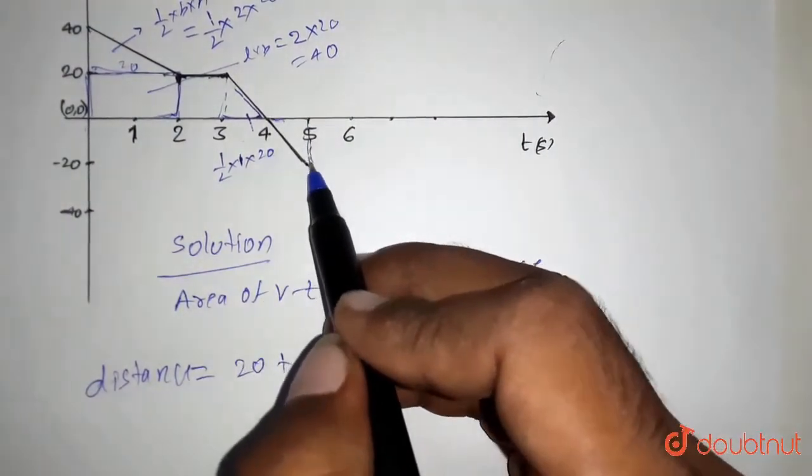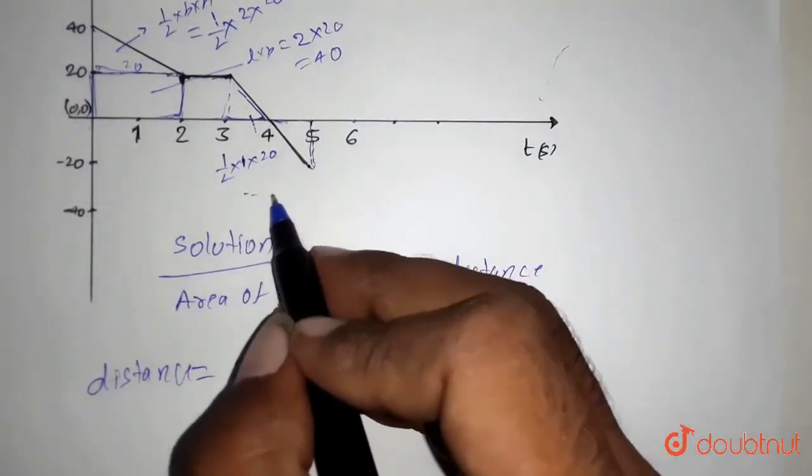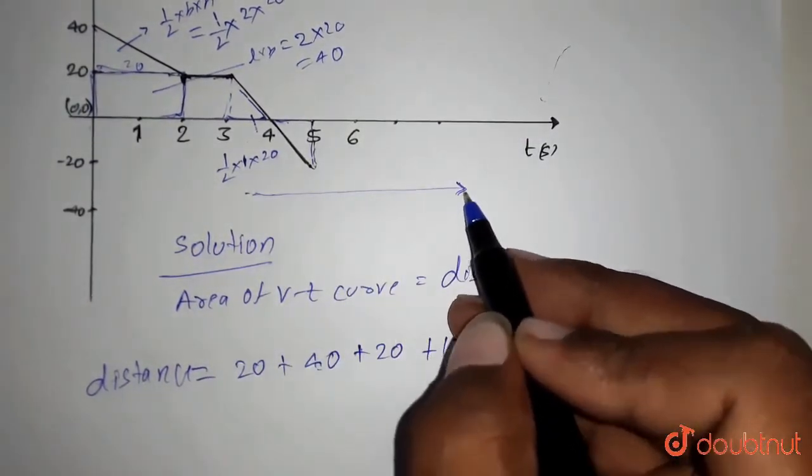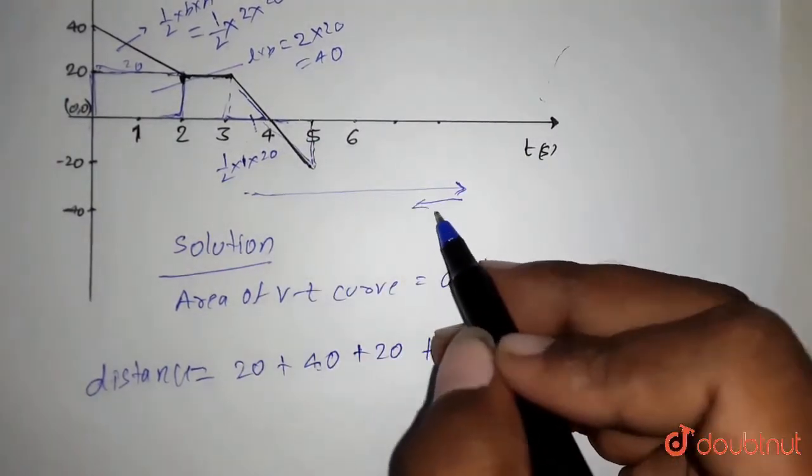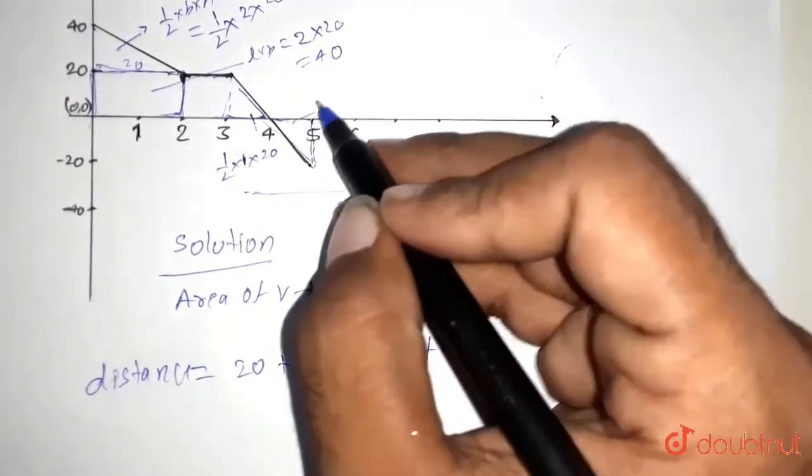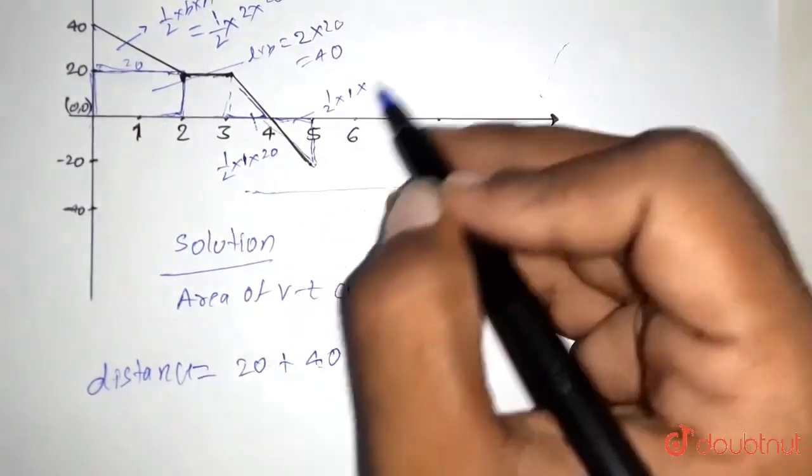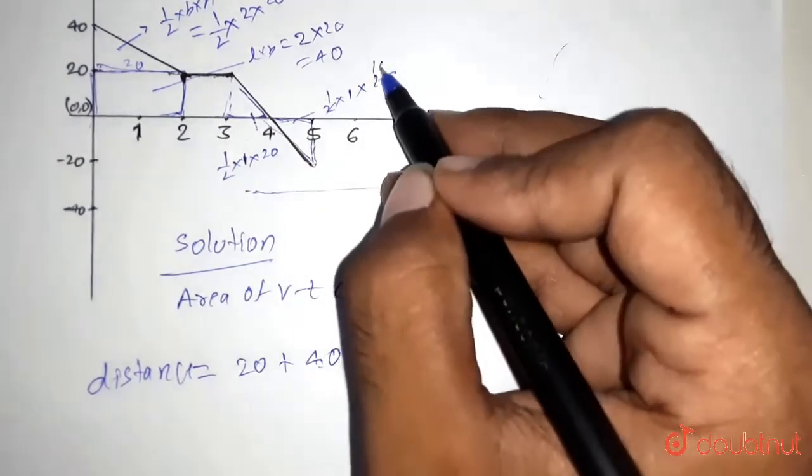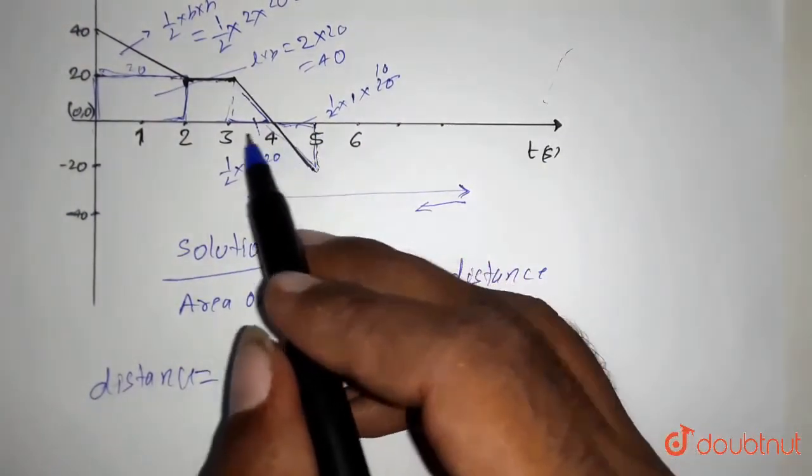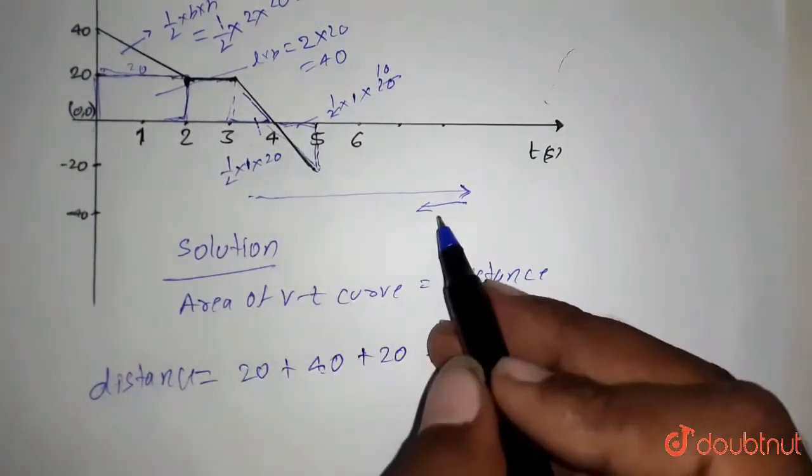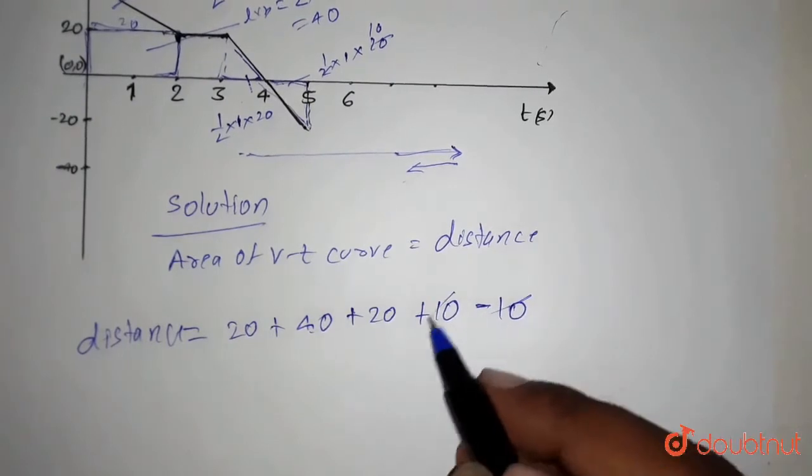Now this triangle is downwards. That means it is going behind. Till the time it was going in the straight line in front part. But now it is going backwards. So it is coming back. So how much area it is? Half into base is 1 and height is 20. So it will be equals to 10. So minus 10. This area will be subtracted from the whole because here that car is traveling backwards. So this will get canceled.